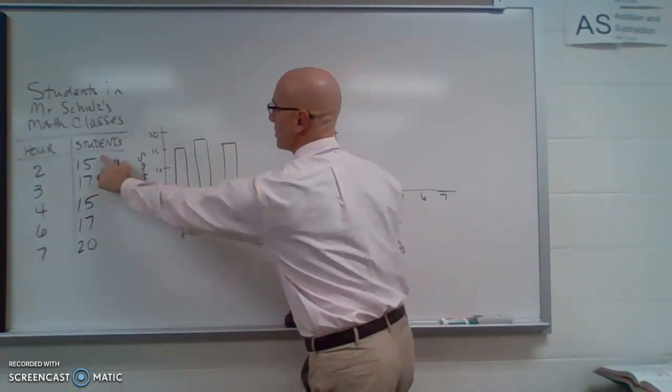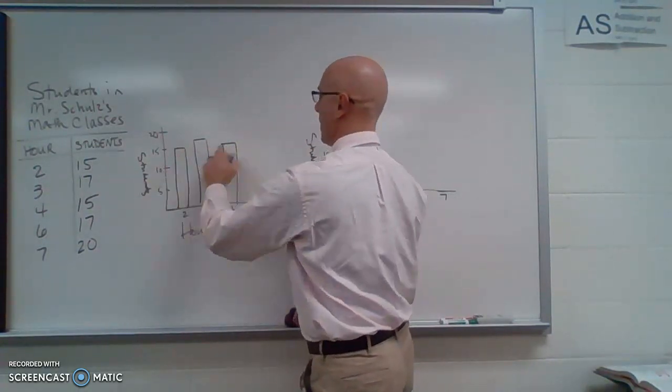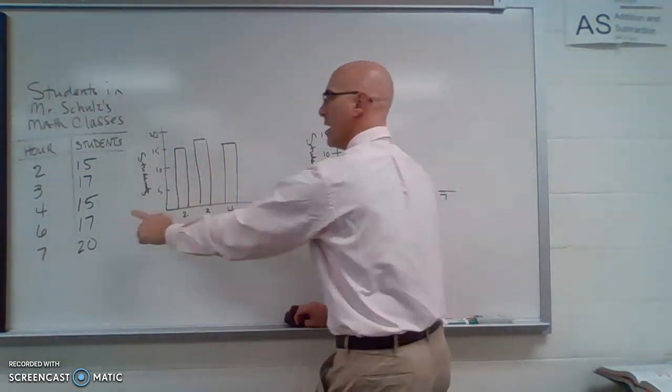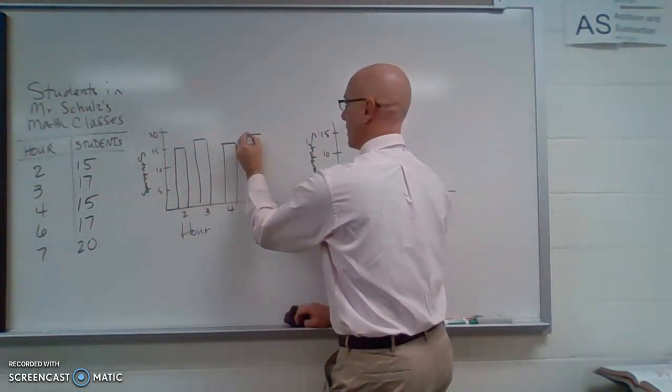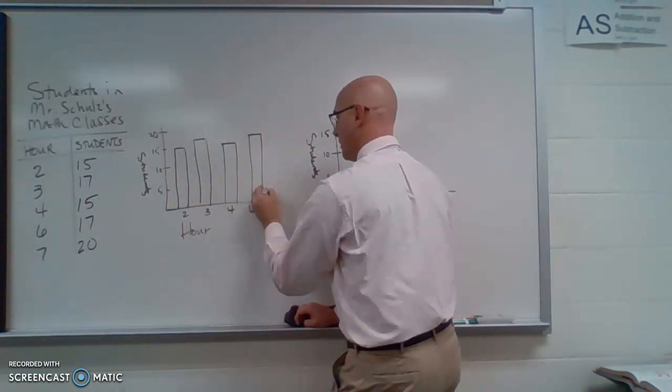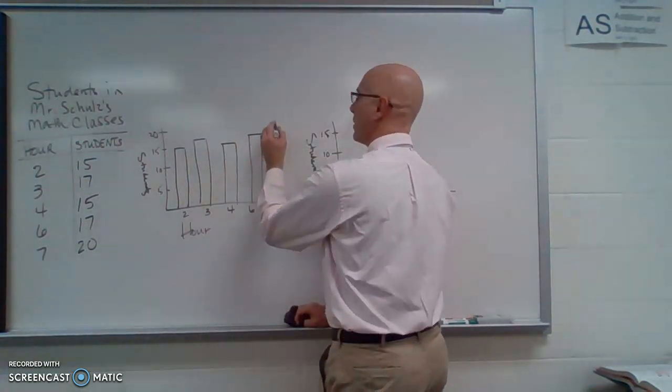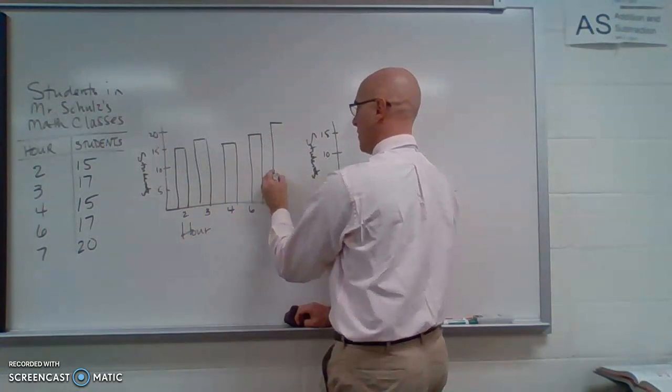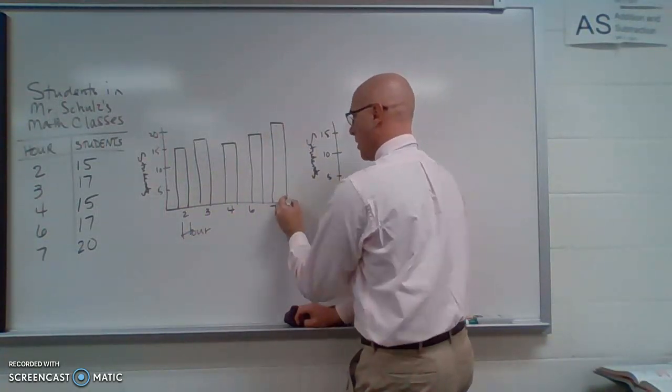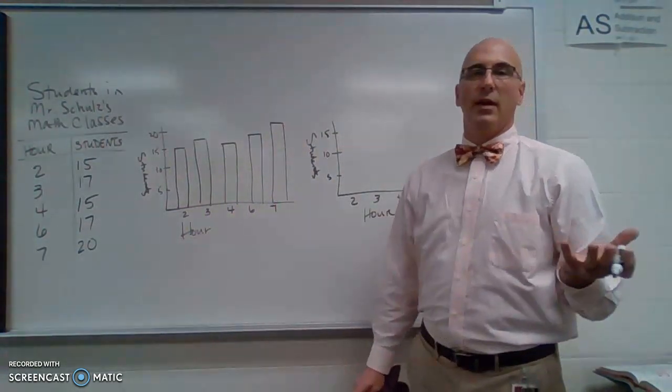So when I'm doing this, I'm seeing that 2nd and 4th hour have to be the same height. 6th hour, I have 17 students again. That's kind of weird how that happens. And then 7th period, I have 20 students. I'm going to bring that all the way up to that line.